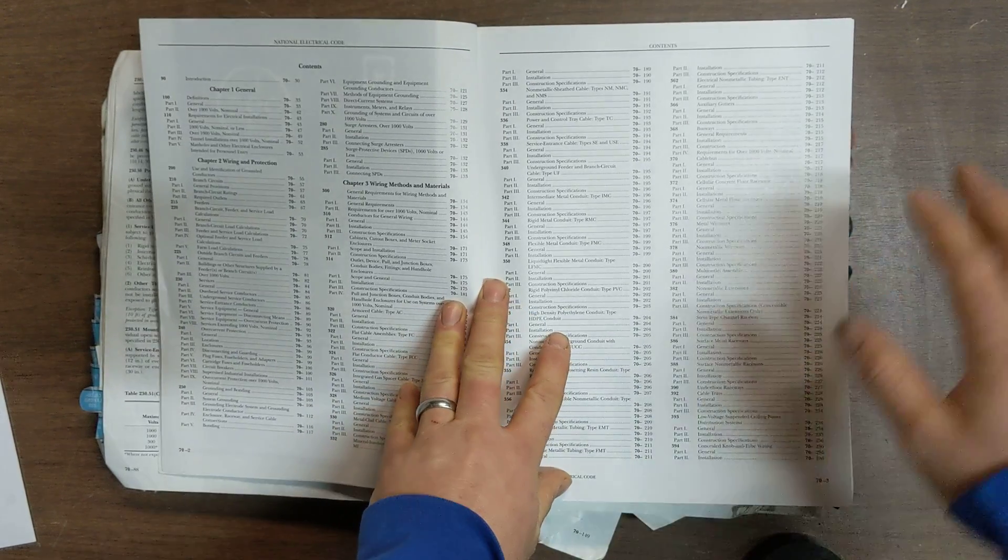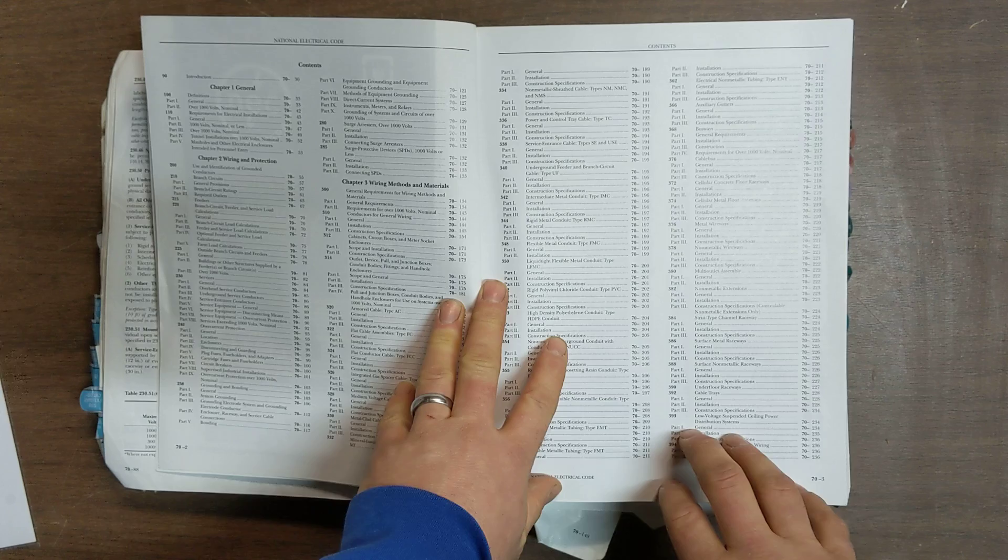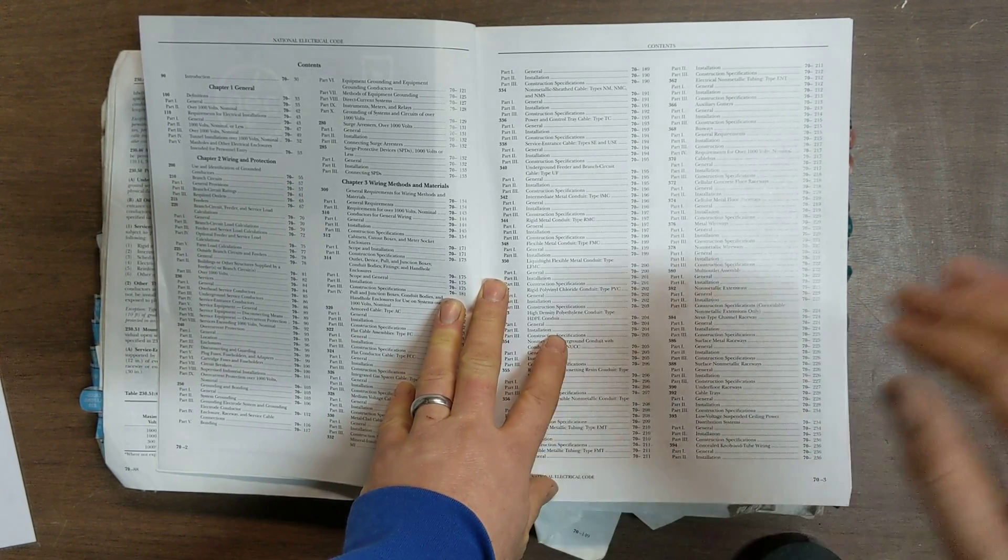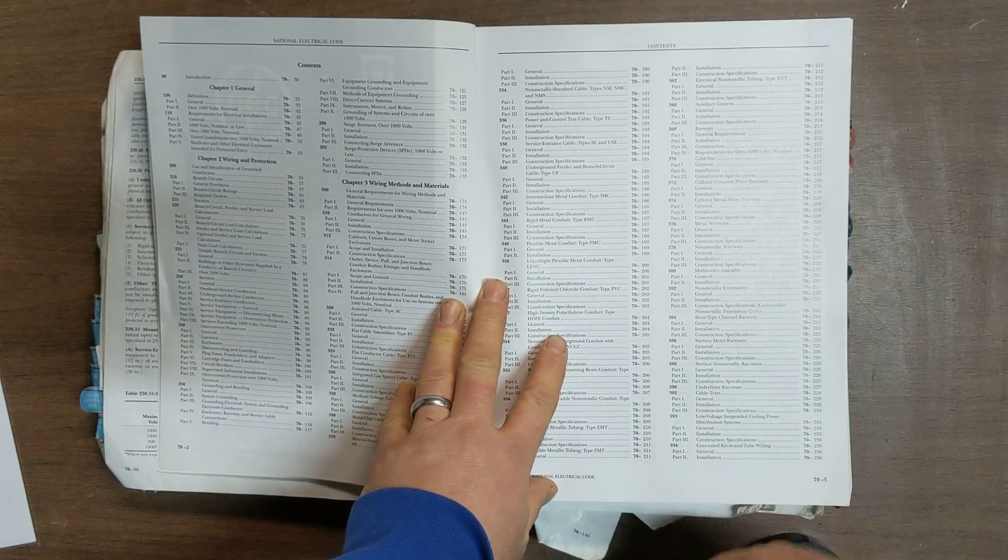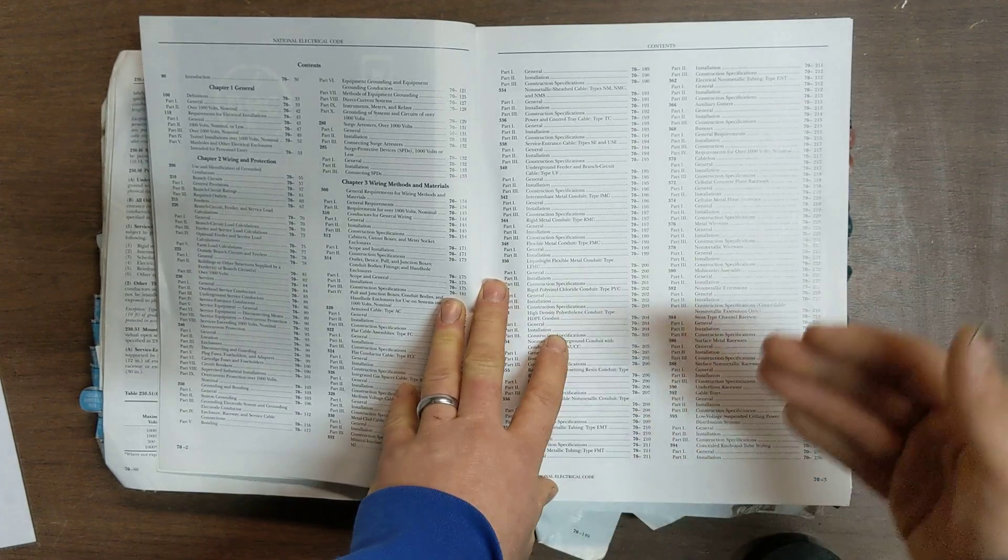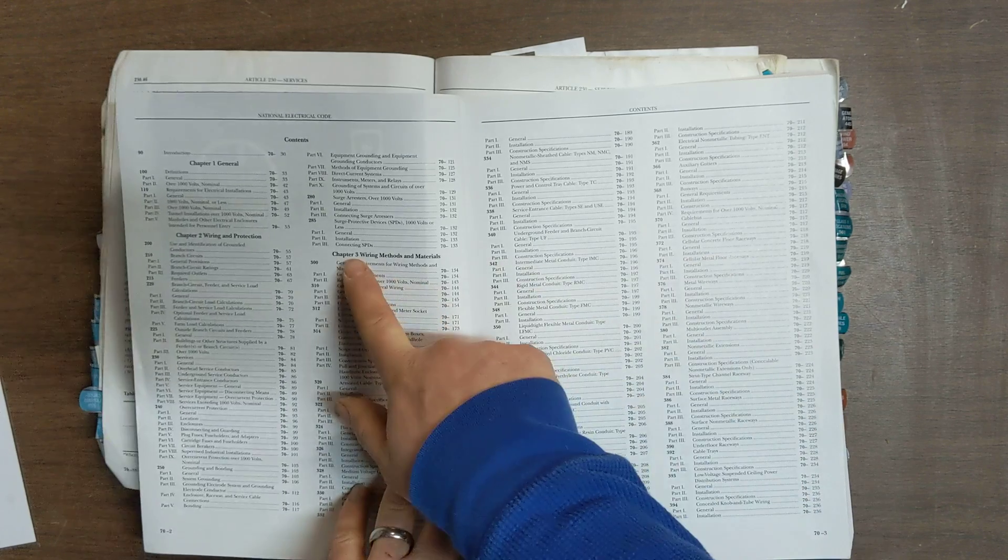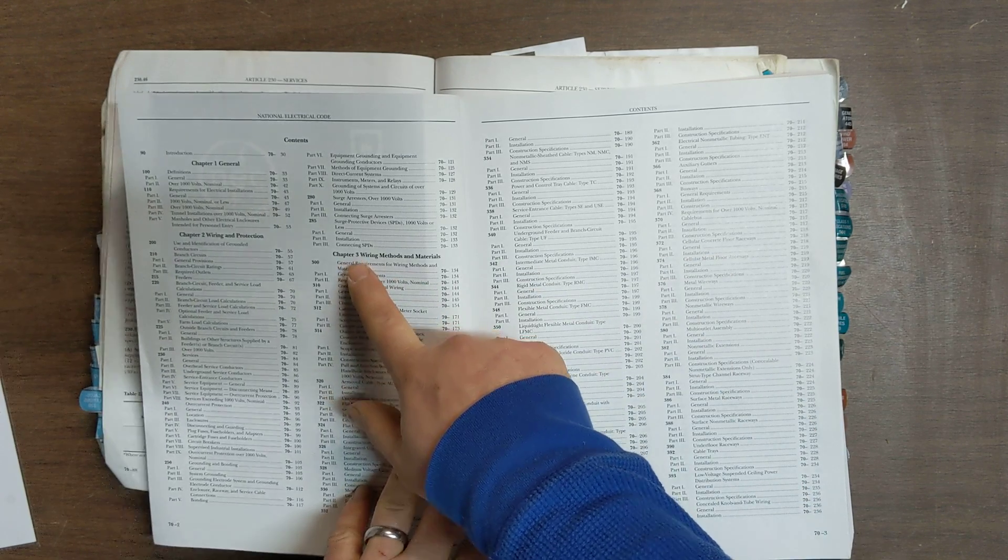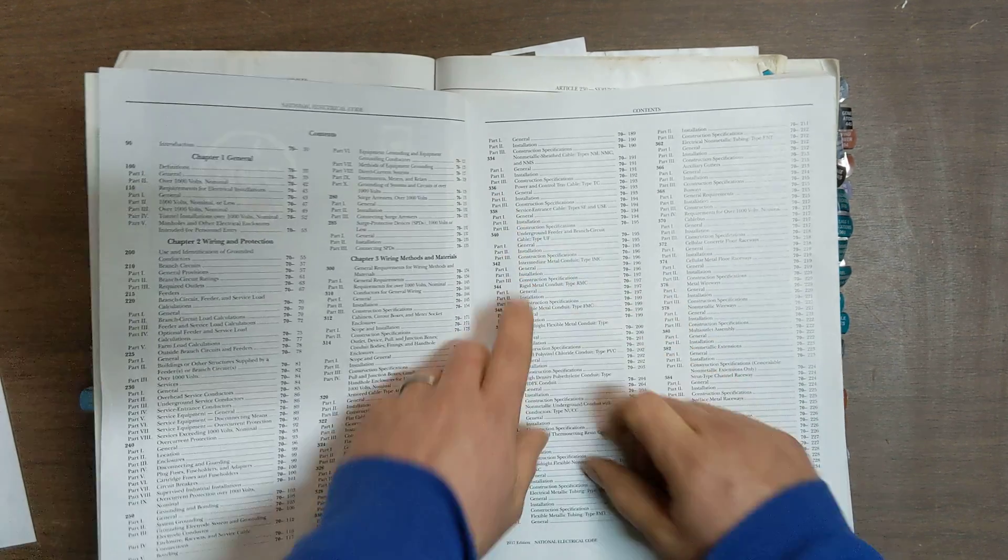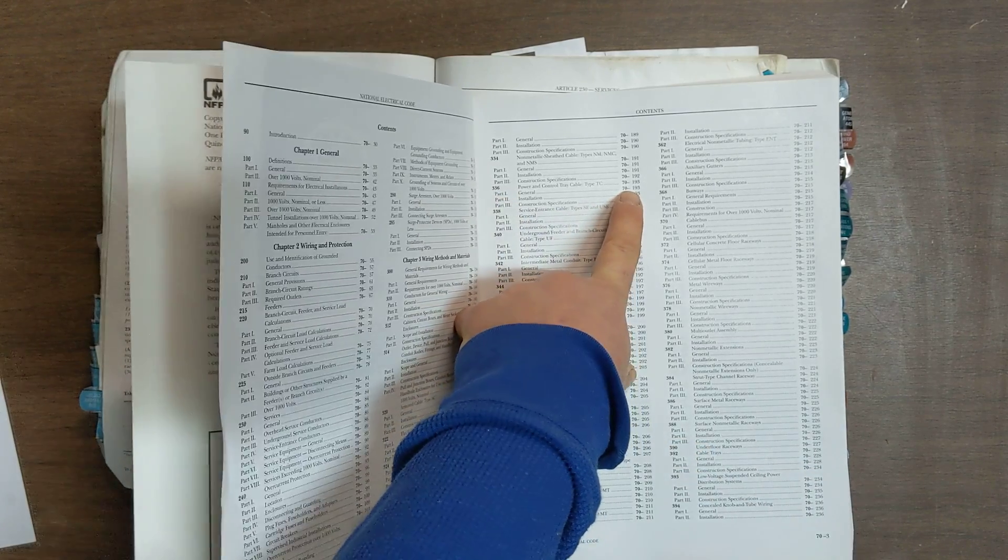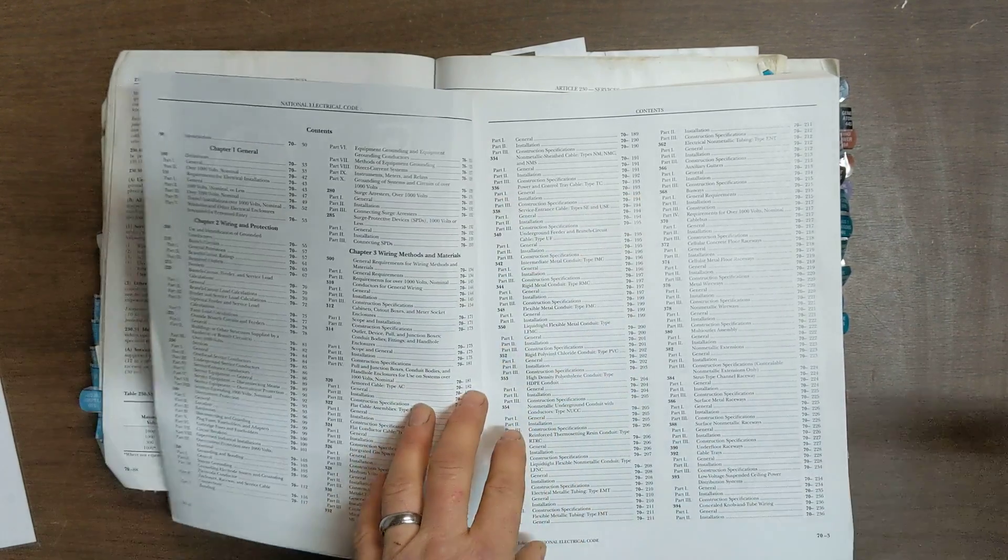So say if you're in the index, which we're going to talk about in a little bit, and it sends you to section 3, or excuse me, part 3 of article 336. You're like, where in the world is that? It's not a direct code reference. What am I going to do? You flip to the table of contents. You go to chapter 3, because it started with the 3. You're going to come over here to 336. It told you to go to part 1, and you're going to see that that's on page 193. And that is going to lead you in that direction.